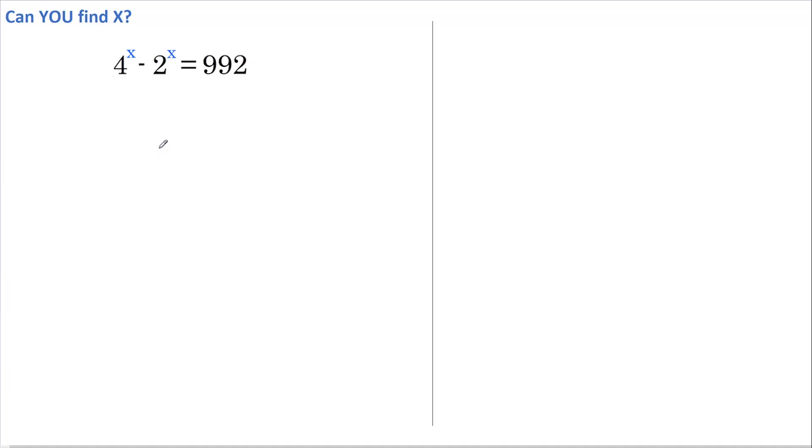Hi there, 4 to the x minus 2 to the x equals 992. Can you find x? If you want to give this a go yourself first, pause the video now. Okay, let's begin. 4 can be rewritten as 2 to the power of 2, so we have 2 to the 2 all raised to the power of x minus 2 to the x equals 992.